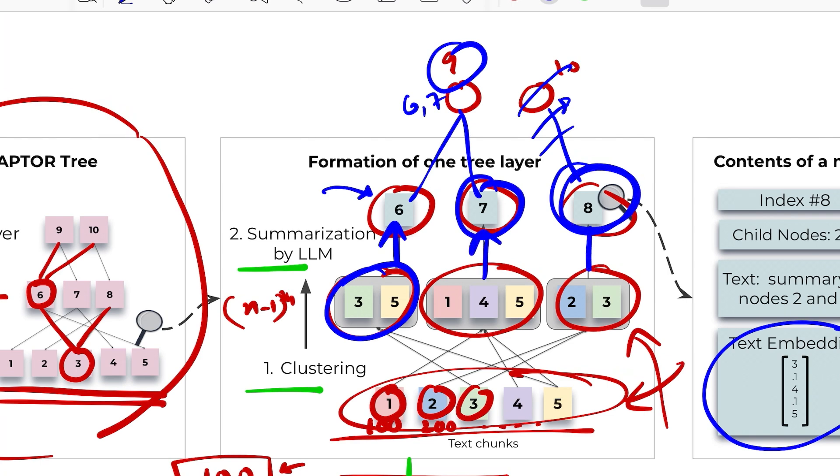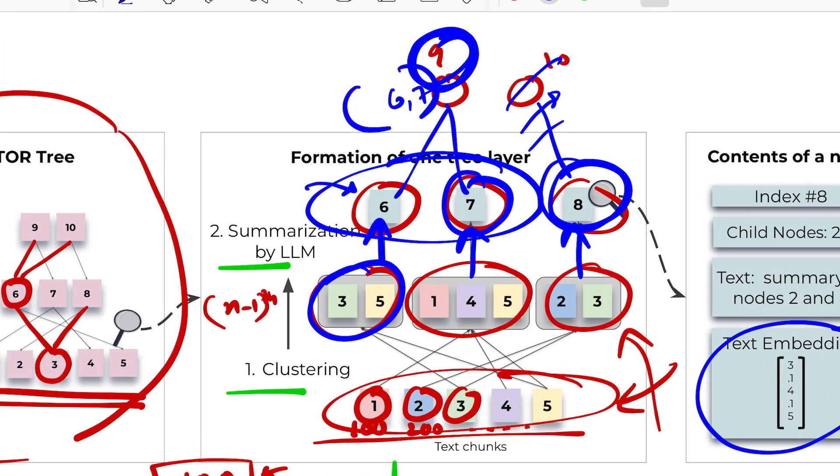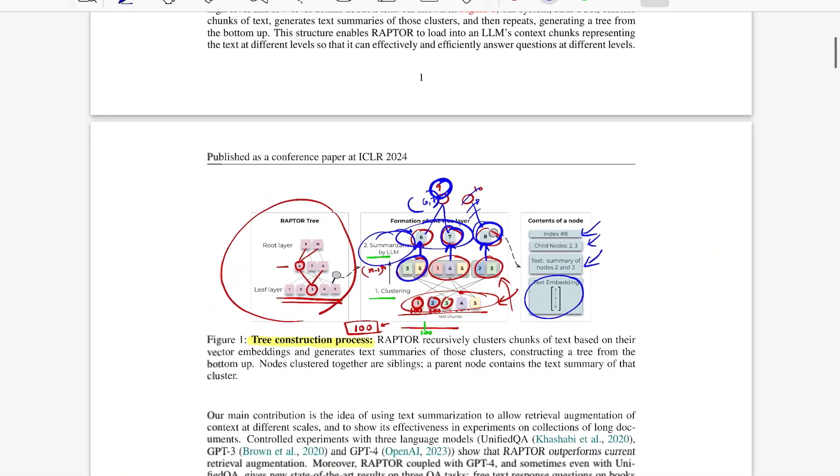So that's nothing but the summary of five and six. Seven holds the summary of one, four, and five, and eight holds the summary of two and three. And then you again cluster over these summaries which are six and seven and have nine that represents the summary of six and seven. So that's how the coarser information is getting created in this tree.